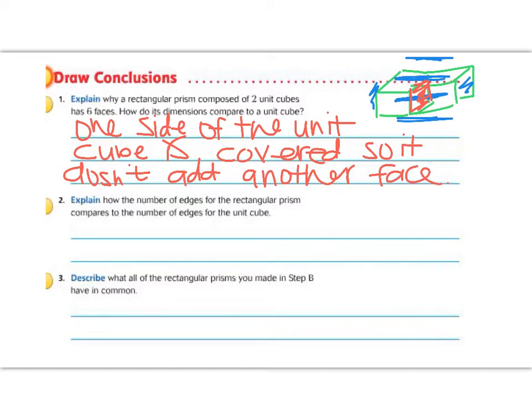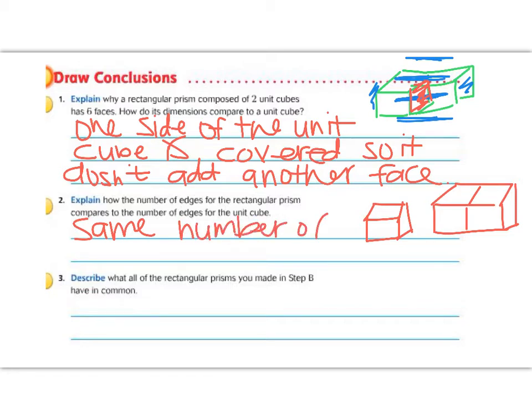Alright, question number 2. Explain how the number of edges for the rectangular prism compares to the number of edges for a unit cube. Well, we counted, on a unit cube, there are 1, 2, 3, 4, 5, 6, 7, 8, 9, and on the back side, 10, 11, and 12. And I know that's hard to see, but in class, we'll actually have unit cubes out and we'll count them. But if I stick 2 next to each other, I have 4, 5, 6, 7, 8, 9, and on the back side, even though there's spaces in here, they're not edges because they touch, so they would have the same number of edges.